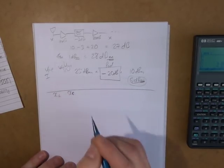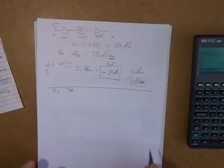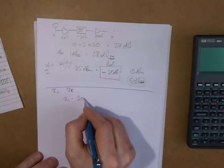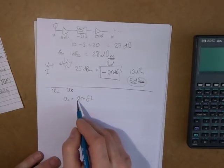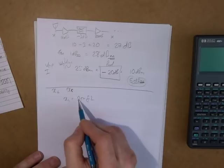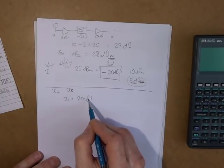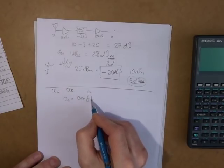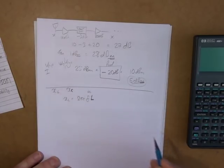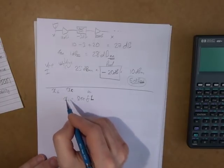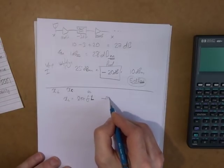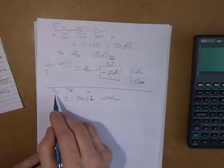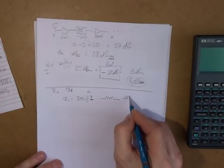I just wanted to briefly touch on that. XL equals 2πFL — so 2π is a constant, F is frequency of operation in hertz, and L is our inductance in henrys. As we know, an inductor's role in life is to impede through its inductive reactance any kind of variations in current.